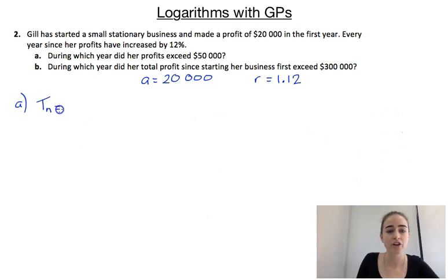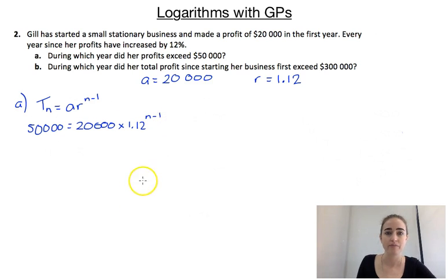We know that the nth term of a geometric series is given by a times r^(n-1). So we want the nth term to be $50,000, or actually we want it to be the first year where it's over $50,000. So we're going to use $50,000 here, equals 20,000 times 1.12^(n-1). So now we need to solve this to figure out what n is.